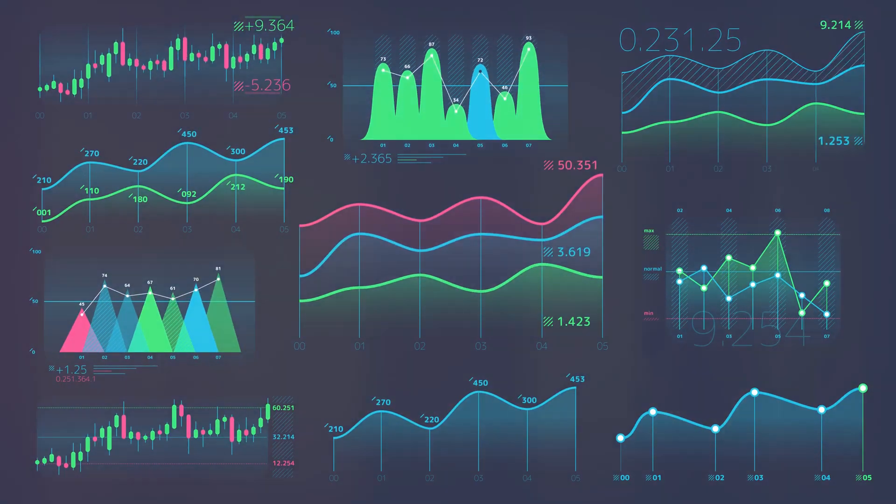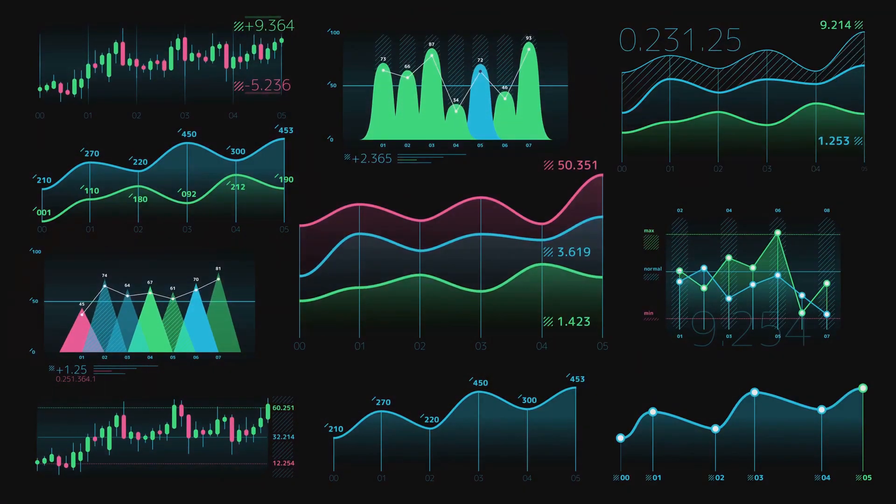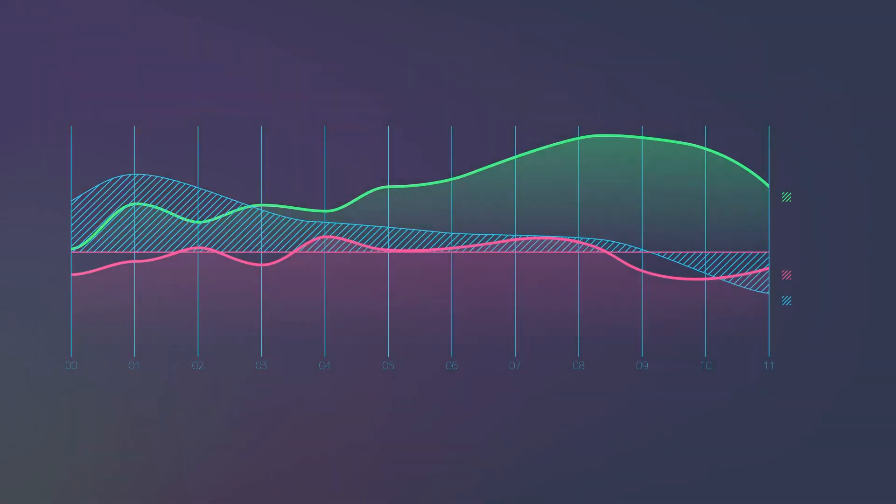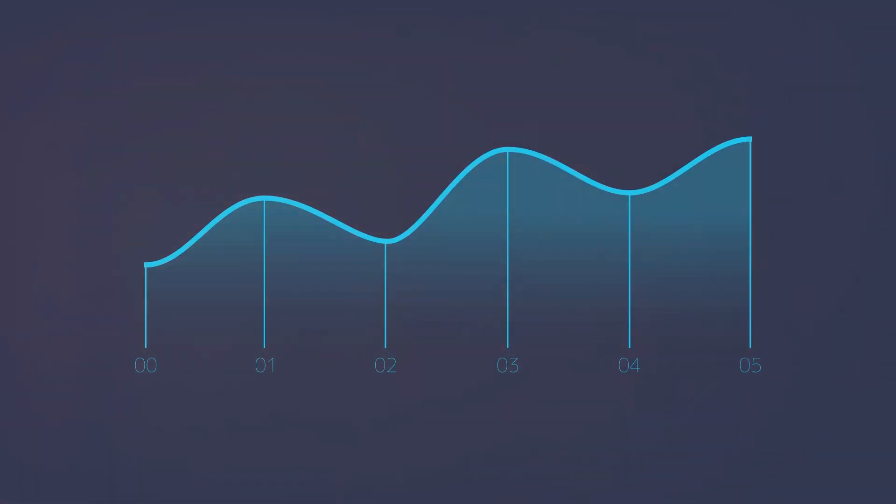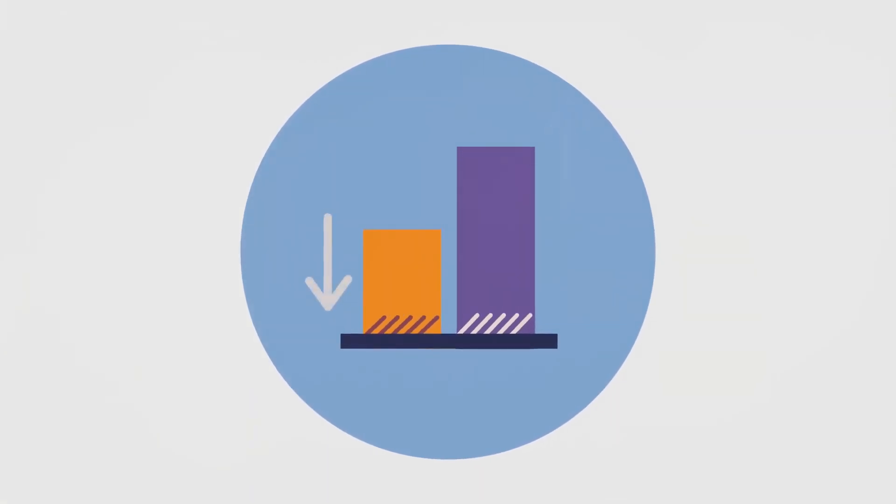But no matter the technique, each has its strengths and weaknesses. Bar charts, while straightforward, may not work well for displaying trends over time. Pie charts can become confusing with too many slices. Line graphs can be misleading if not scaled properly. Scatter plots can be hard to interpret with too many data points. Heat maps require careful colour choices. Choosing the right technique depends on your data and what you want to communicate. Sometimes you might even need to use a combination of techniques to effectively tell the story of your data.